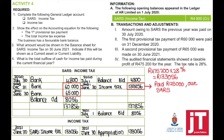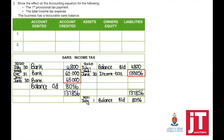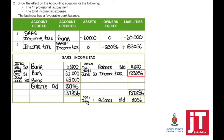Income tax: at the end of the accounting period, income tax is closed off to the appropriation account. To show the effect on the accounting equation for the provisional tax payment: account debited SARS income tax, account credited bank — assets minus $60,000, liabilities minus $60,000. To show the income tax expense for this year: account debited income tax, account credited SARS income tax — owner's equity minus, liabilities plus.